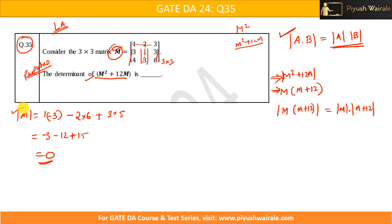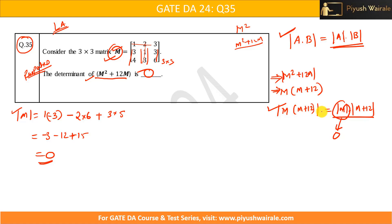Since the determinant of M is zero, the entire determinant is zero. So the answer to this question is zero. The determinant of M squared plus 12M equals zero, because by the property det(M · (M + 12I)) = det(M) · det(M + 12I), and det(M) = 0.